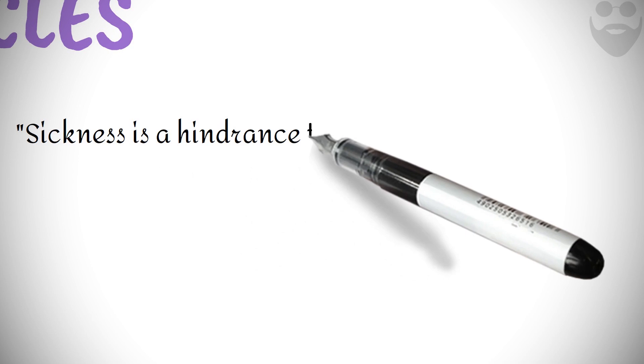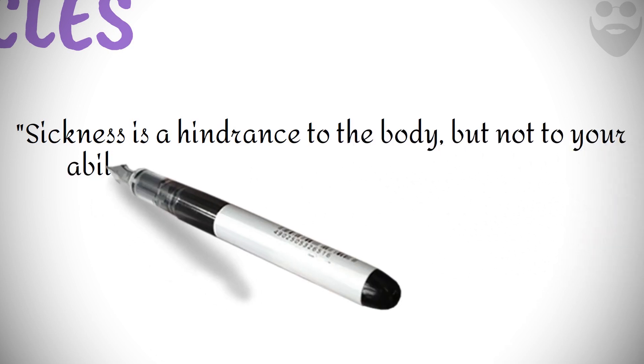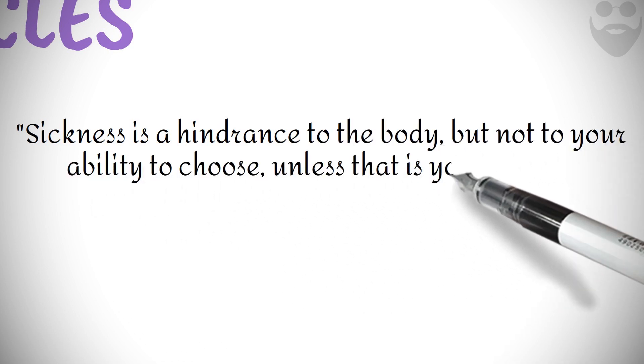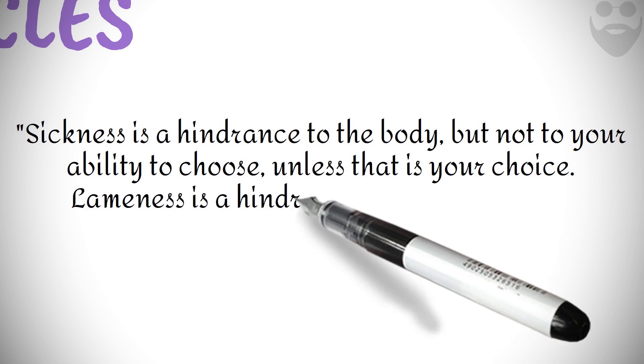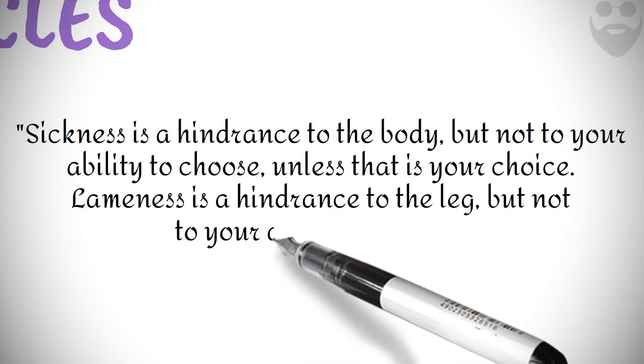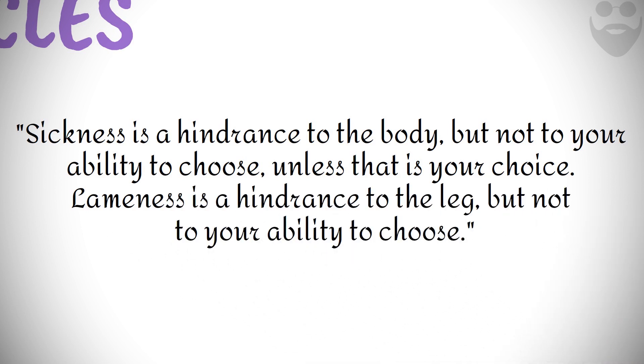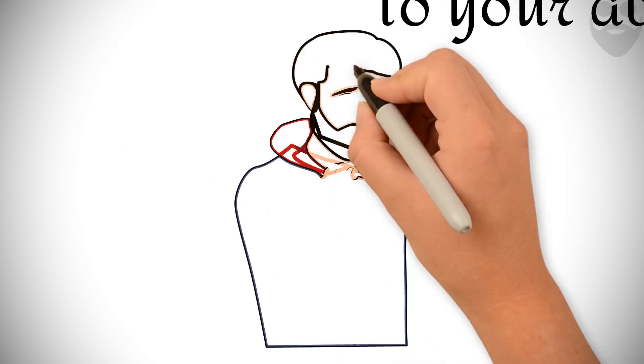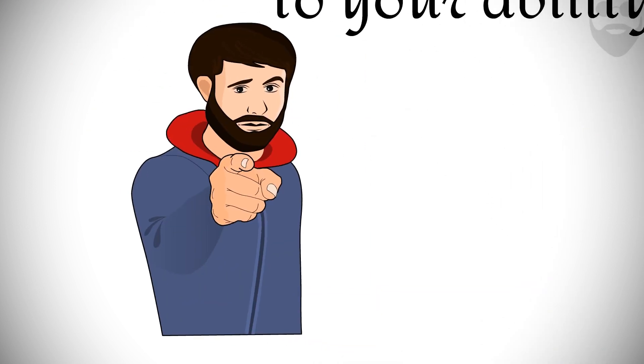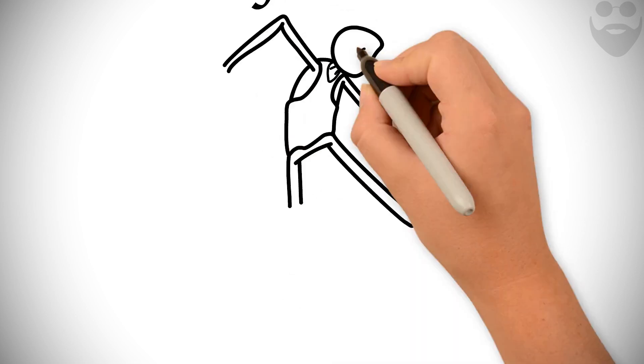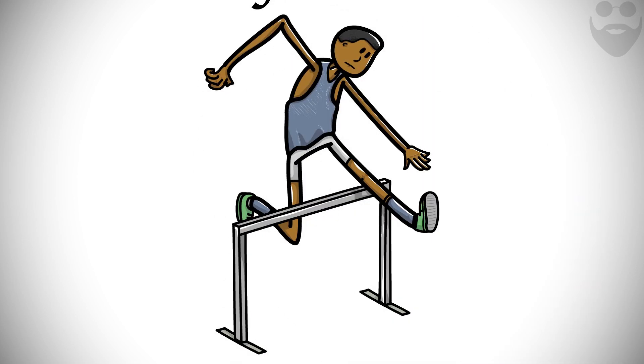Keeping this in mind, analyze what Epictetus remarks here. Sickness is a hindrance to the body, but not to your ability to choose, unless that is your choice. Lameness is a hindrance to the leg, but not to your ability to choose. Say this with regard to everything that happens. Then you'll see such obstacles as hindrances to something else, but not to yourself. Enchiridion 9.